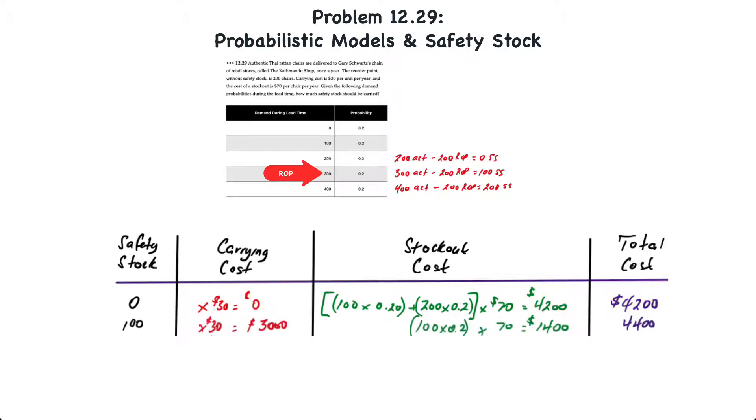Then we look at the next level of safety stock. If the company chooses to hold 100 units then it would have to inventory those 100 units. So 100 units times $30 is a $3,000 carrying cost. If the company holds 100 extra chairs and demand ends up being 400 units, then the company would be short 100 chairs at a probability of 20%. So that's 20 times $70 is $1,400. When we add the carrying cost and the stockout cost, that equals a total of $4,400.